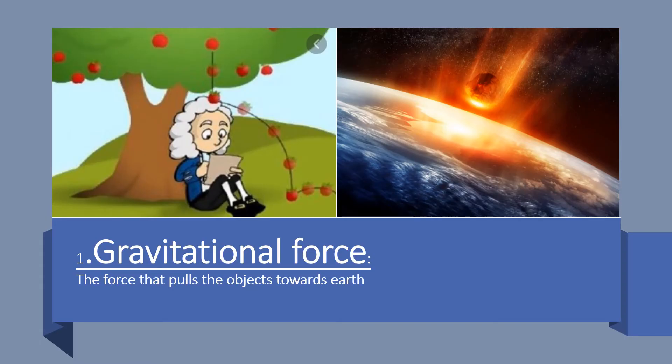Gravitational force is the force that pulls objects towards the Earth. You can see a meteorite falling towards the Earth, and you would have also seen fruit falling and hitting the ground. We call this gravitational force.